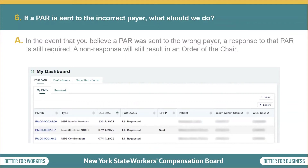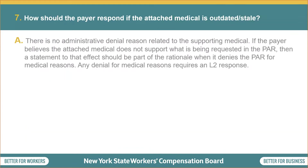Question 6: if a PAR is sent to the incorrect payer, what should we do? In the event that you believe a PAR was sent to the wrong payer, a response to that PAR is still required. A non-response will still result in an order of the chair. Question 7: how should the payer respond if the attached medical is outdated or stale? There is no administrative denial reason related to the supporting medical. If the payer believes the attached medical does not support what is being requested in the PAR, then a statement to that effect should be part of the rationale when it denies the PAR for medical reasons. Any denial for medical reasons requires a Level 2 response.